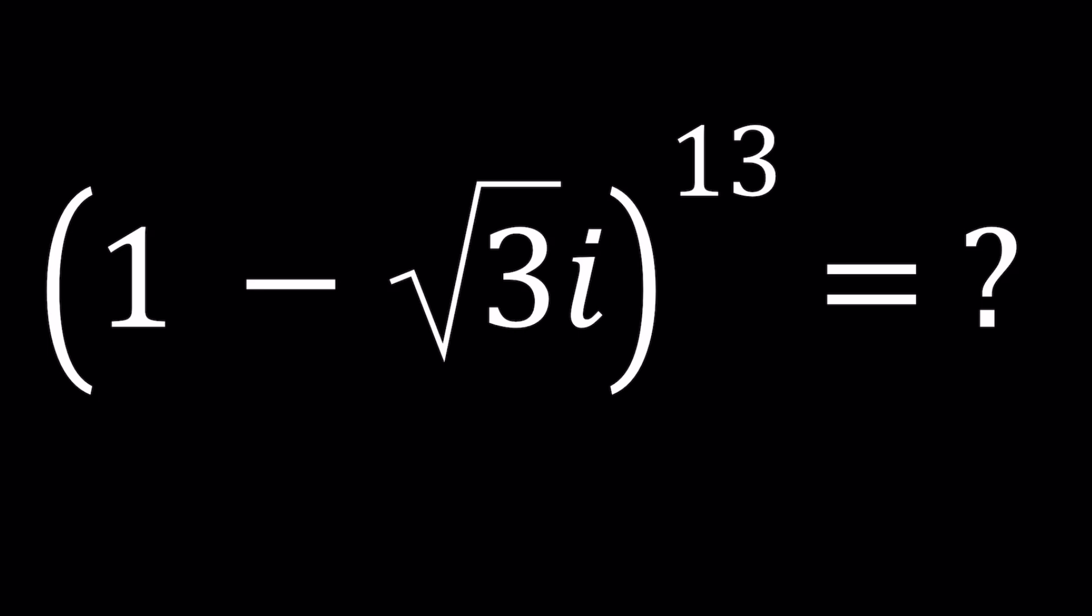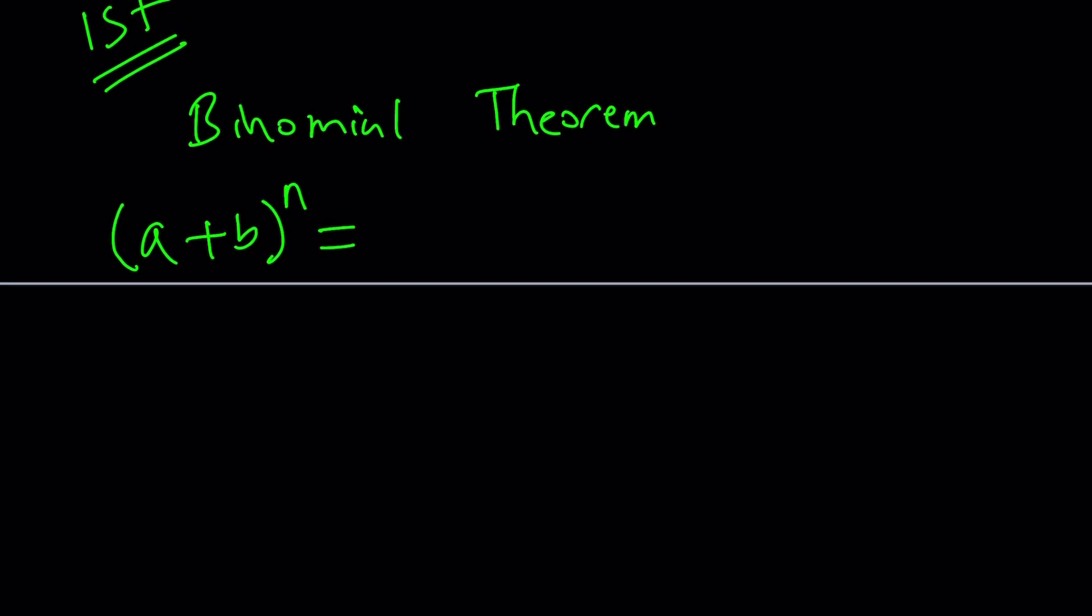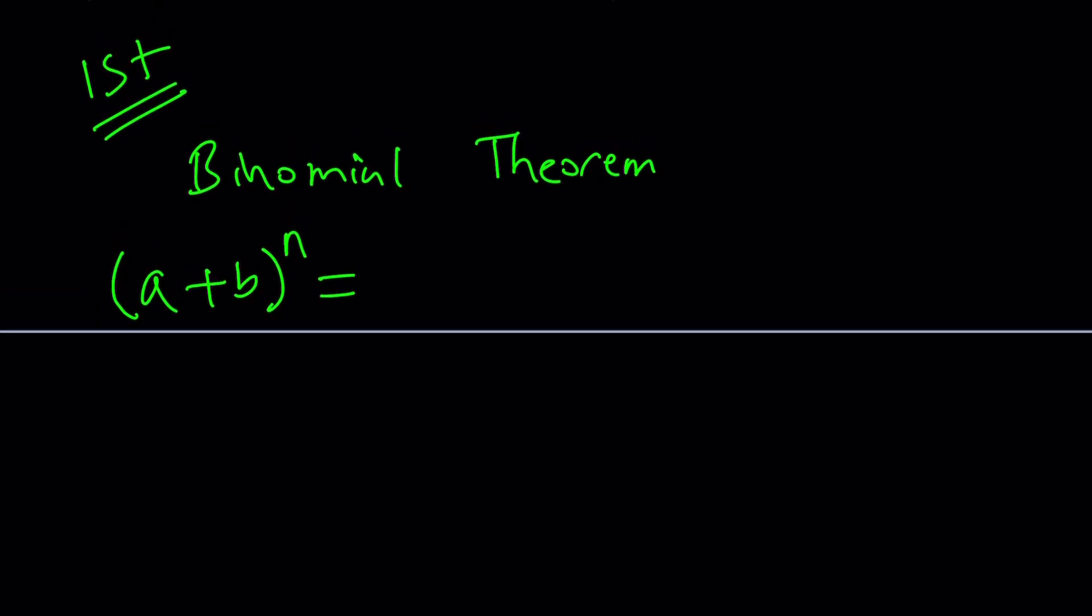So my first method uses the binomial theorem. What is the binomial theorem? The binomial theorem is basically a really cool formula that gives us a way to expand A plus B to the nth power. And n doesn't have to be integer but let's just say for now n is an integer. We can write this as n choose 0 A to the power n plus n choose 1 A to the power n minus 1 B. Basically the powers of n start with the highest and keep dropping while powers of B pop up and keep increasing. We end with n choose n B to the power n.